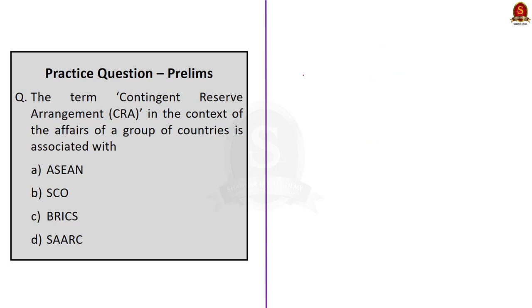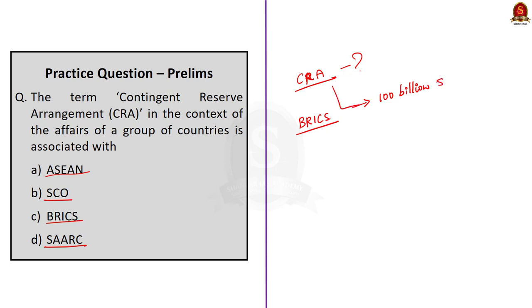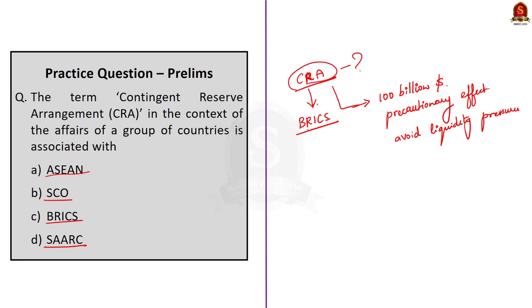The second question: The term Contingent Reserve Arrangement in the context of the affairs of a group of countries is associated with — option A: ASEAN, option B: SCO (Shanghai Cooperation Organization), option C: BRICS, option D: SAARC. The answer is BRICS. The Contingent Reserve Arrangement was established with an initial size of $100 billion US dollars. This arrangement aims to have a positive precautionary effect, helps countries tackle short-term liquidity pressures, and strengthens the global financial safety net. The arrangement has the provision of liquidity through currency swaps to prevent short-term balance of payments pressures. So the correct option is C — BRICS.